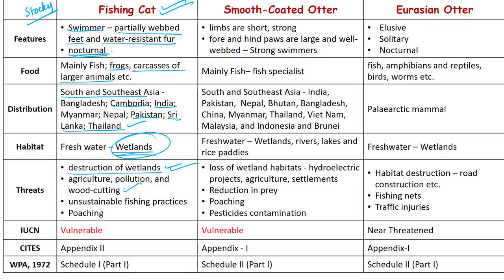Other threats to fishing cats include depletion of their main prey — fish — due to unsustainable fishing practices, and occasional poaching for their skin. For the smooth-coated otter, it is also listed as Vulnerable on the IUCN Red List, listed in Appendix 1 of CITES, and protected under Schedule 2 Part 1 of the Wildlife Protection Act. Major threats include loss of wetland habitats due to hydroelectric projects, agriculture, and human settlements, reduction in fish prey, contamination by pesticides, and poaching for their pelt and other body parts.